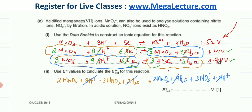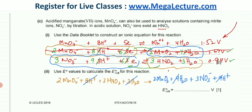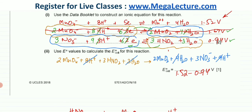Hopefully it's clear that even if you had selected the 1.67V equation, the result would have been the same. We should have picked the 1.52V equation instead. The E° cell is higher potential minus lower potential, so the answer is 1.52 minus 0.94, which gives 0.58 volts.